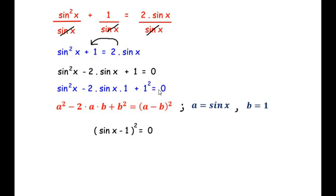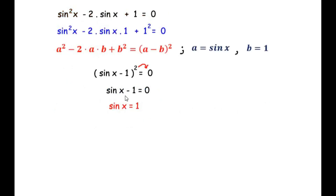Since (sin x - 1)² = 0, taking the square root of both sides gives sin x - 1 = 0, therefore sin x = 1. This is the value of sin x.